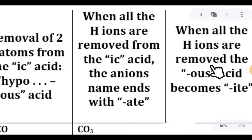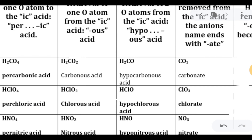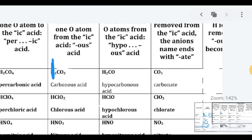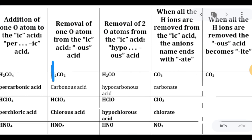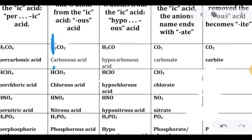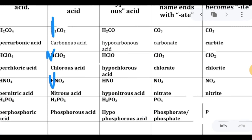When all hydrogen ions are removed from the -ous acid, the suffix becomes -ite. From carbonous acid, removing all hydrogen gives CO₂ — carbite. From chlorous acid, removing all hydrogen gives ClO₂ — chlorite. From nitrous acid, removing all hydrogen gives NO₂ — nitrite. From phosphorous acid, removing all hydrogen gives PO₃ — phosphite.